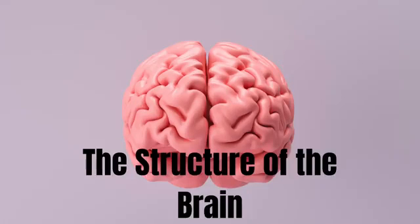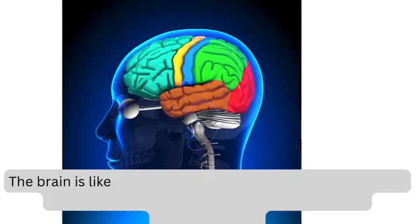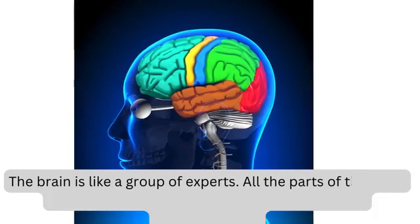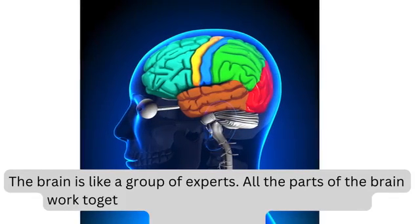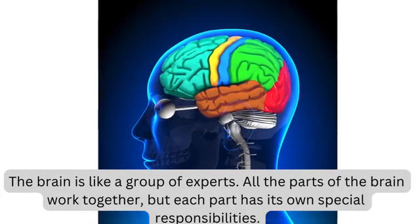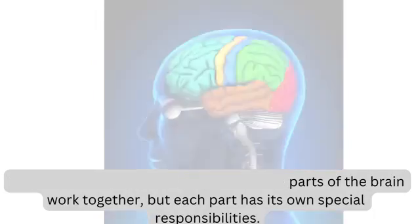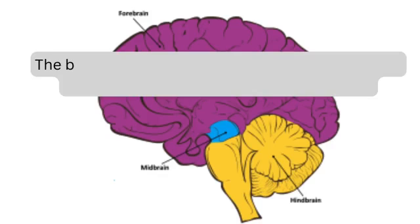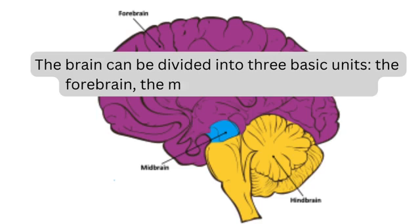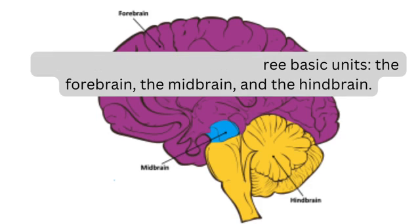The structure of the brain. The brain is like a group of experts. All the parts of the brain work together, but each part has its own special responsibilities. The brain can be divided into three basic units: the forebrain, the midbrain, and the hindbrain.